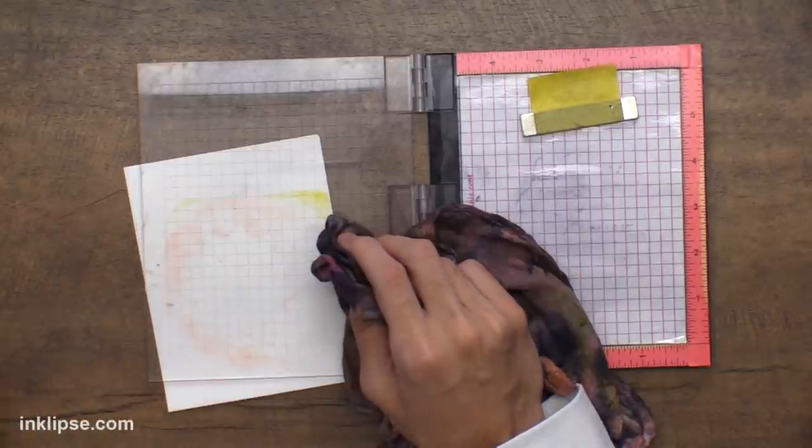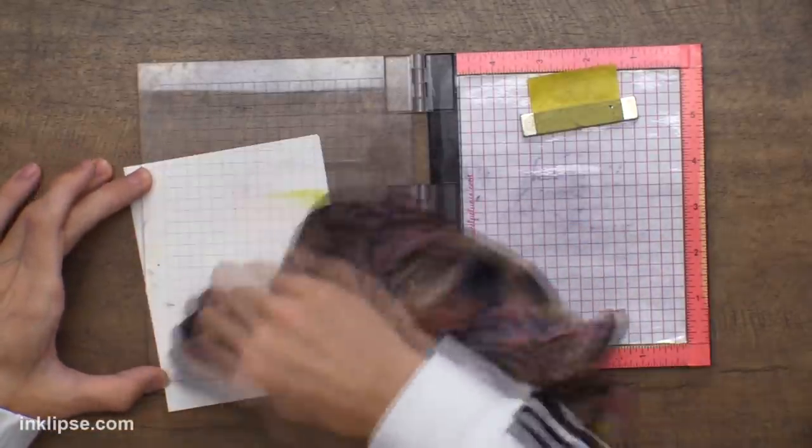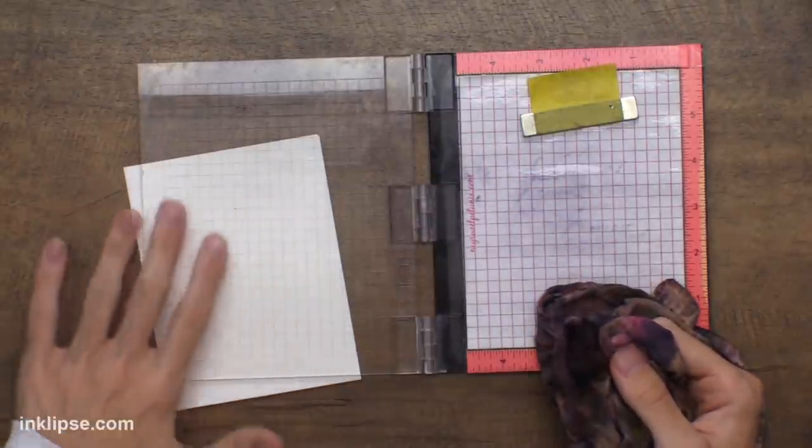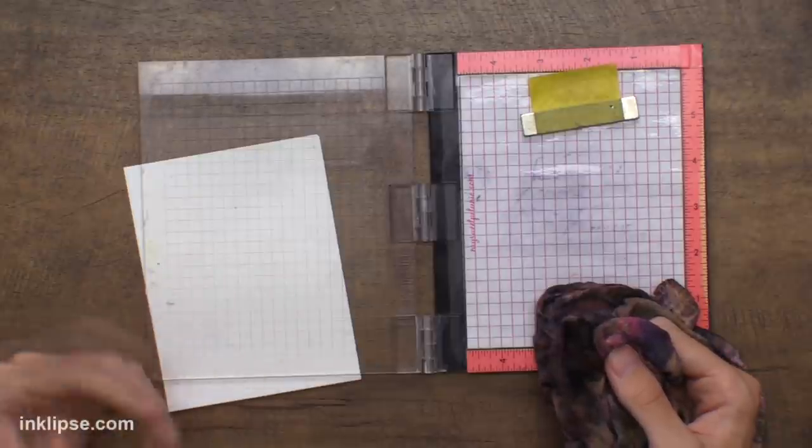So I've cleaned that off. I like to use it to clean off my MISTI too because you don't want to use really any harsh cleaners on this lid or anything like that. Once that's all clean you can see it's nice and clear again and we can go back to stamping on it which is really nice.